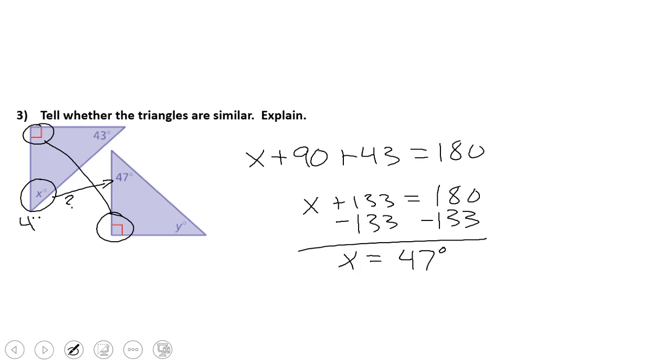And if X is 47, that means it is congruent to the other 47. So again, yes, these triangles are similar.